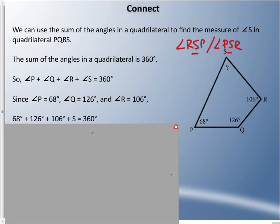68 degrees plus 126 degrees plus 106 degrees plus S equals 360. Well, 300 is the answer we get when we add all those three degrees up. So 300 plus what equals 360? Well, 360 minus 300 is 60 degrees, so angle S equals 60 degrees.